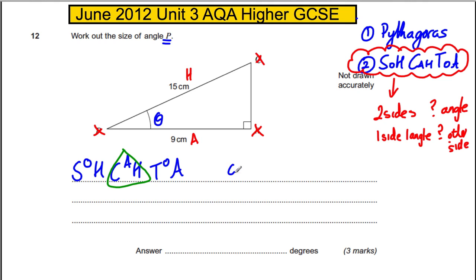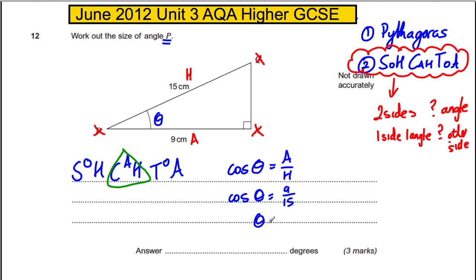So we're going to use CAH. CAH means cosine of the angle equals adjacent over hypotenuse. Substituting in: cosine of the angle equals adjacent 9 over hypotenuse 15. Therefore the angle is the inverse cosine of 9 over 15.